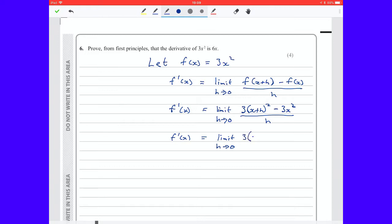So it's 3x squared plus twice the product, 2xh, plus h squared minus 3x squared, all divided by h.